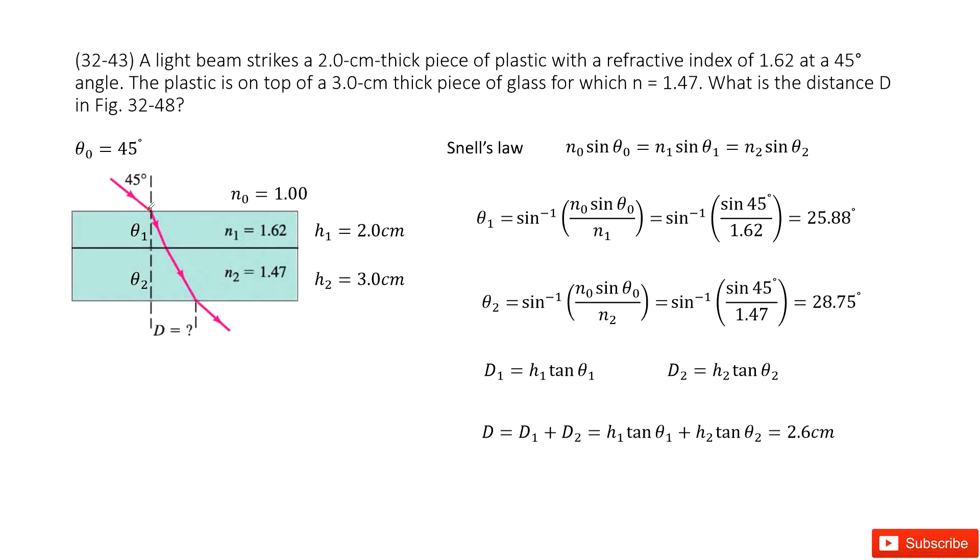Now it incidents two objects with two layers. First layer, the index is n1, we write it there, and the thickness is h1, we write it there. And also this incident angle, this refraction angle, we can make it as theta 1.